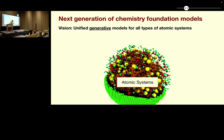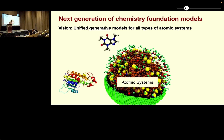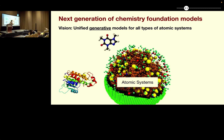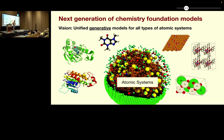We are going to have universal interatomic potentials probably soon. So what's next? One of the things we've been thinking about is one of the next frontiers could be generative models — generative models that unify all these kinds of systems, because they're all atomic systems that are interactions of atoms with each other. So can we learn these shared physical principles of atomic interaction and learn to generate them?